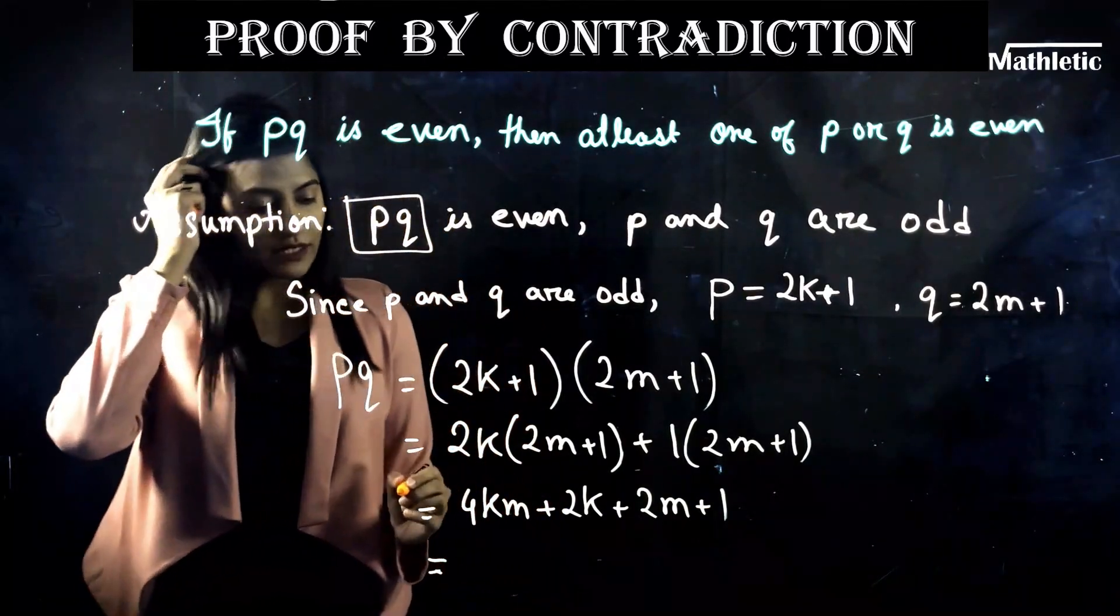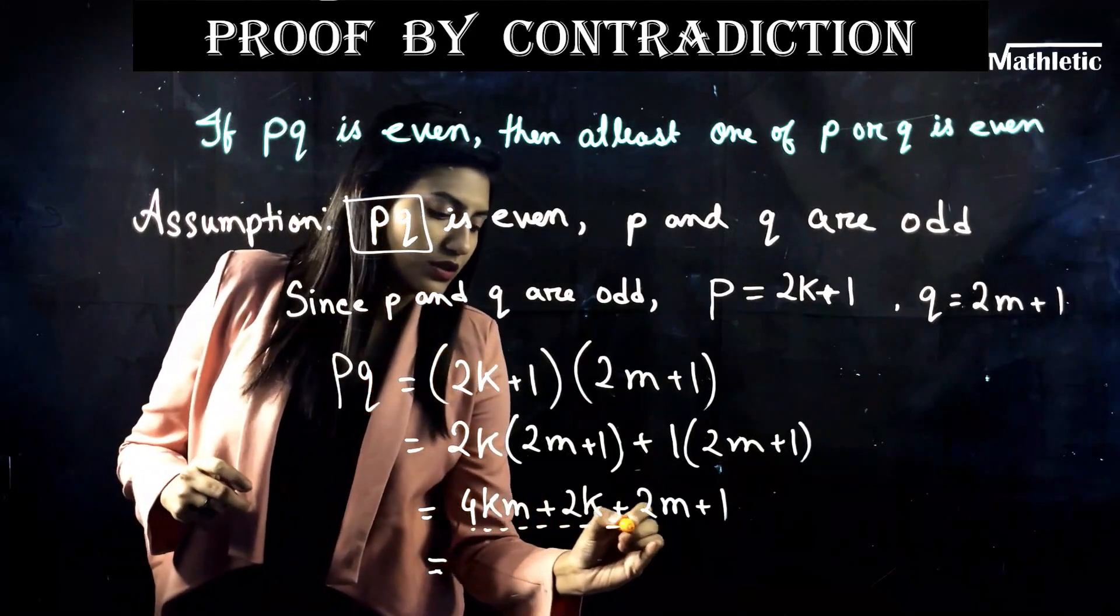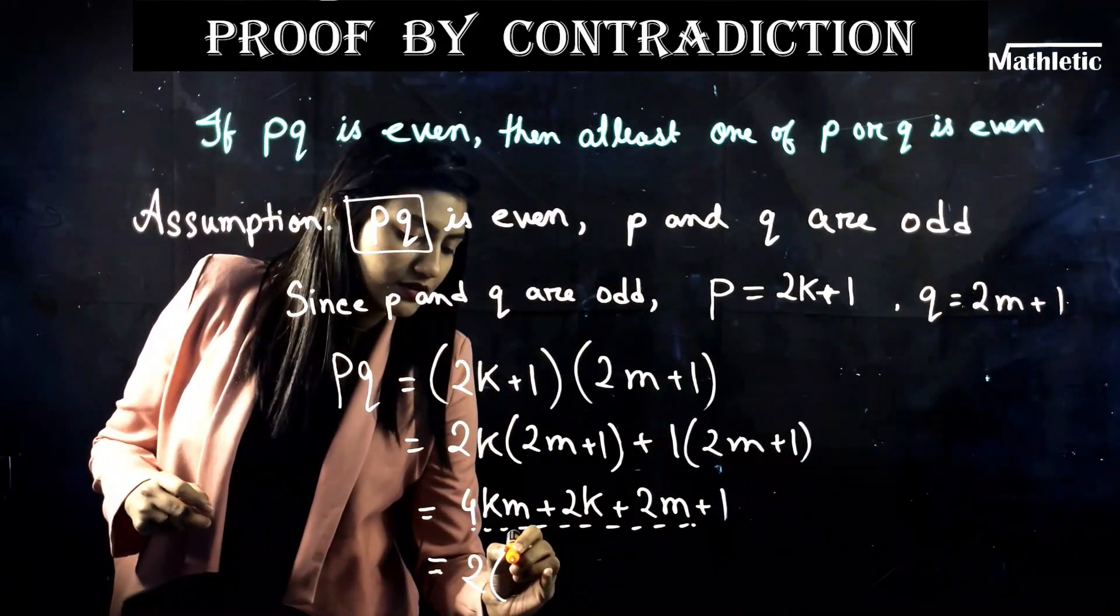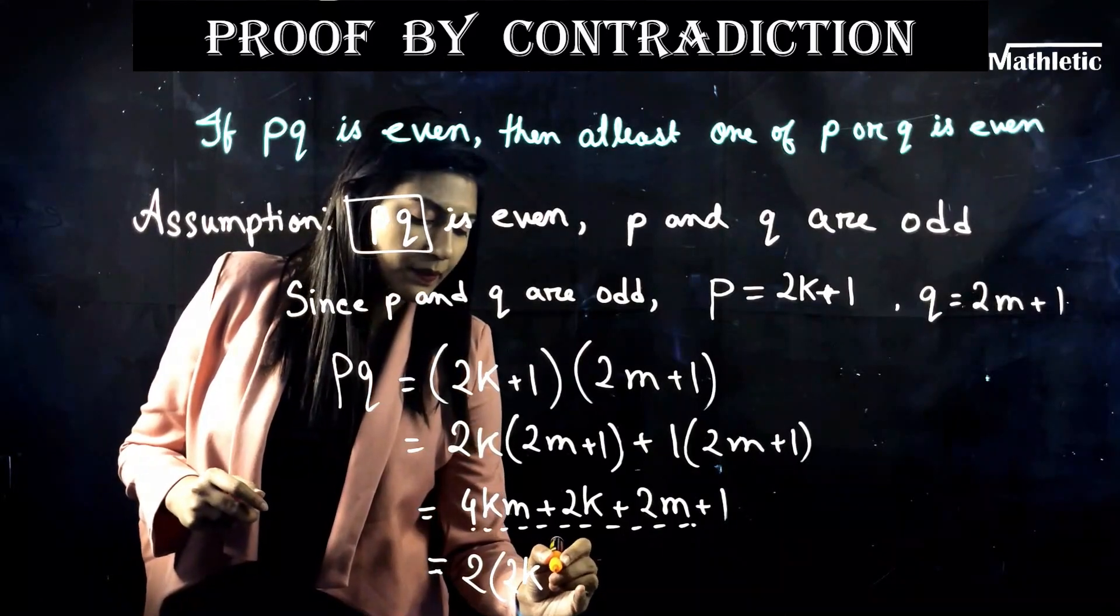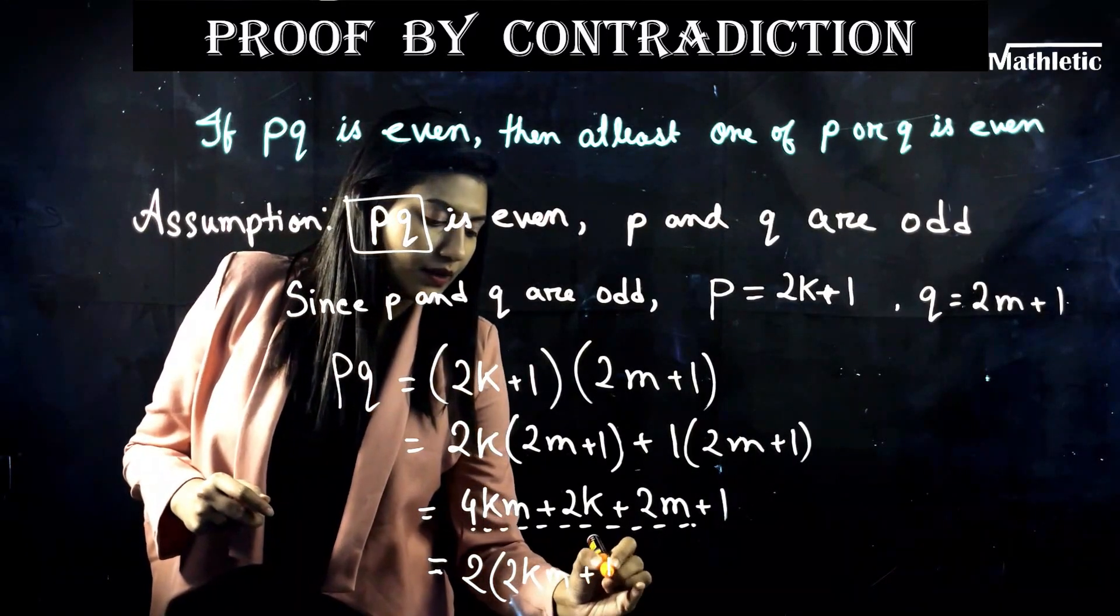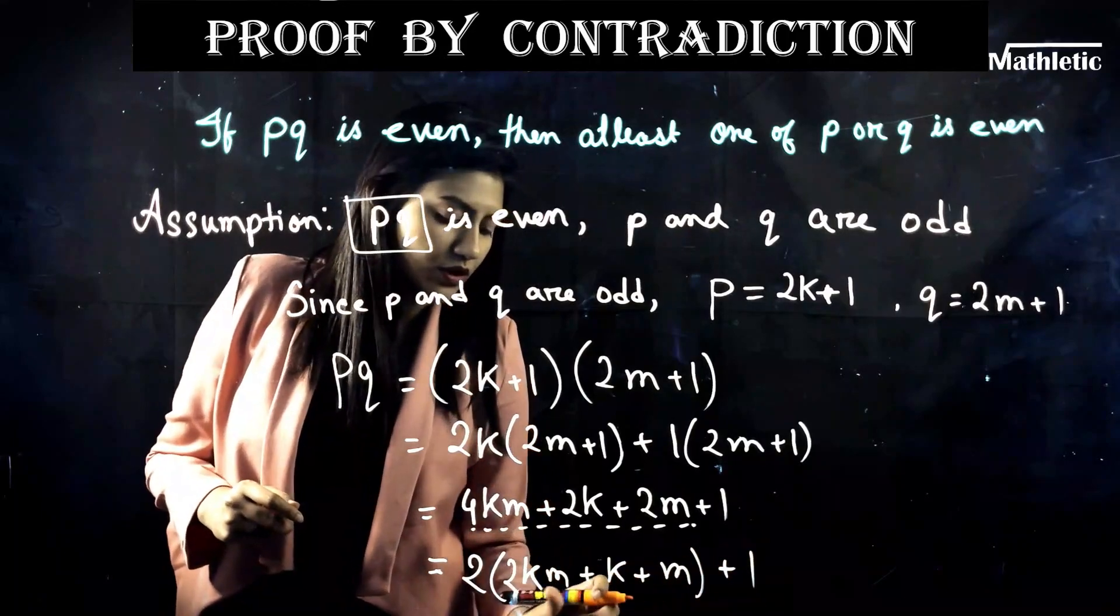So from this expression as we can see the first three numbers we can actually take 2 out of it. We can factorize this part. So 2(km + k + m) + 1.